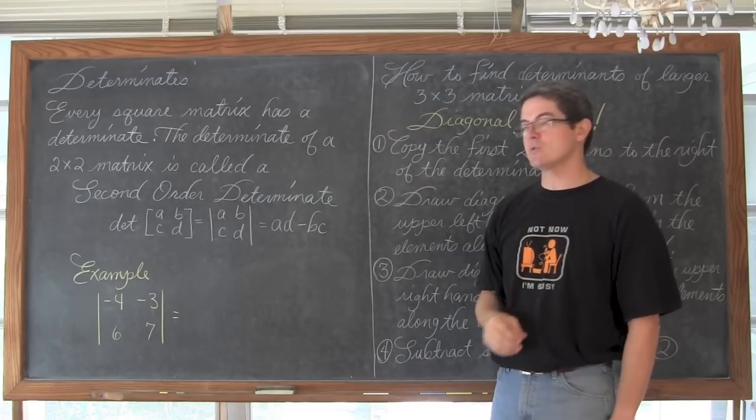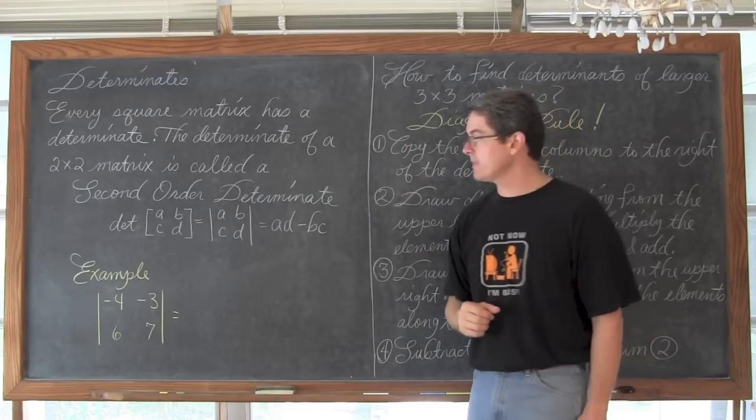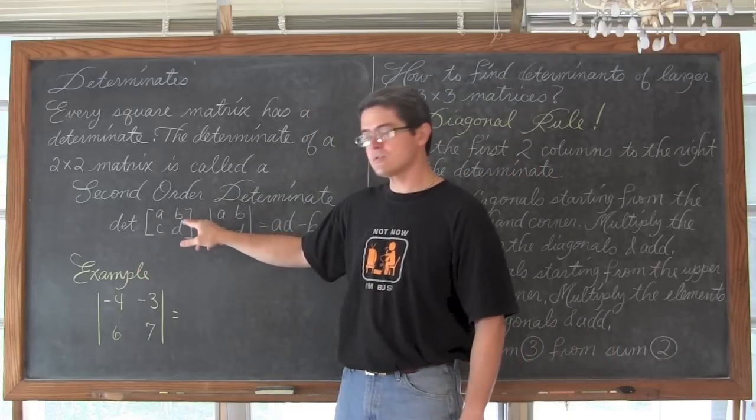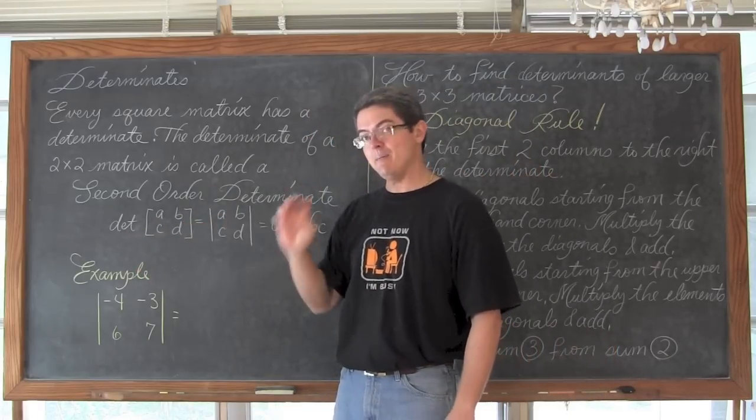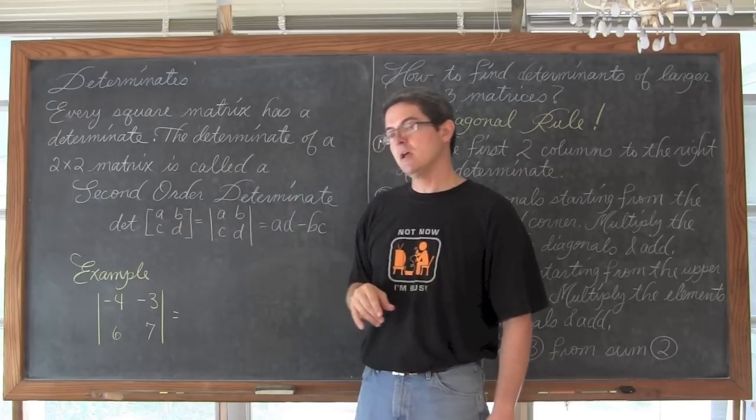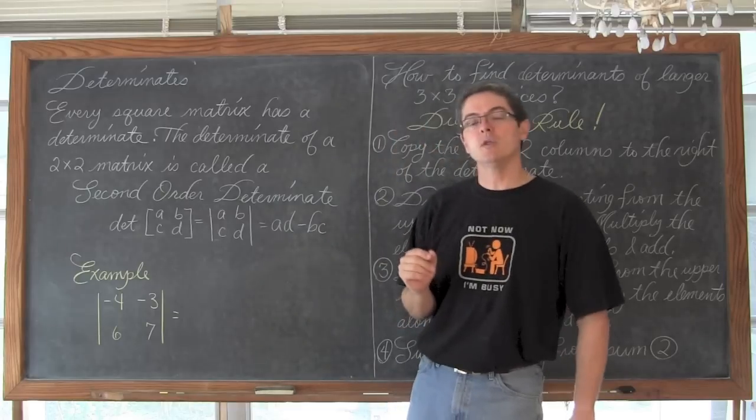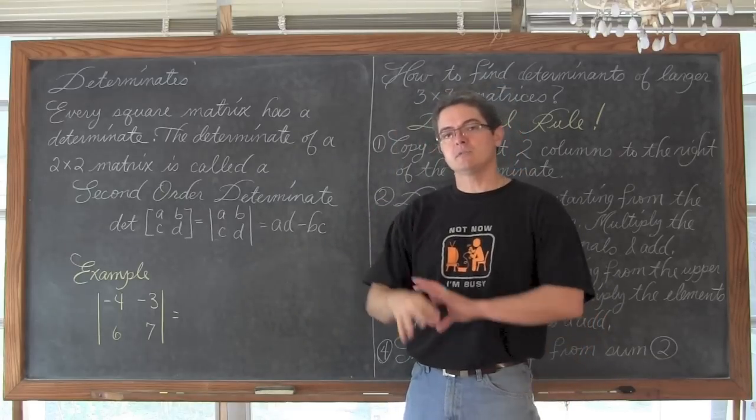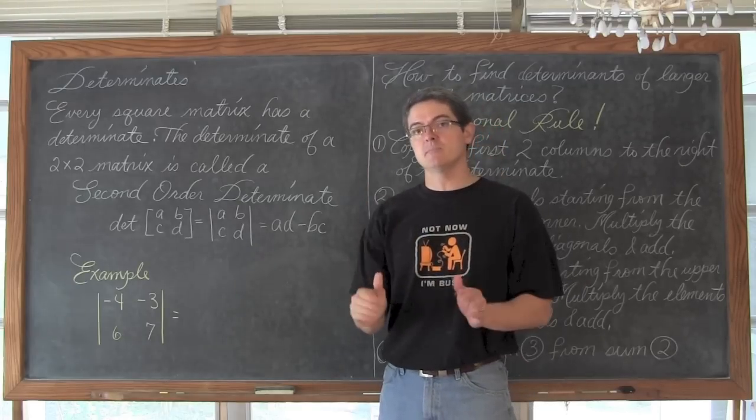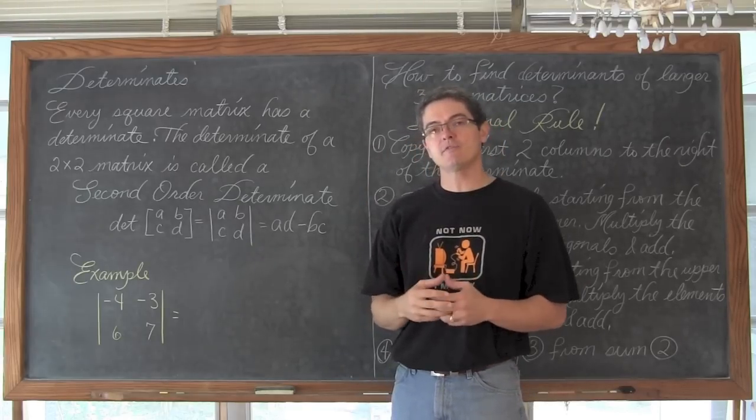The determinant of a 2 by 2 matrix is called the second order determinant. The determinant of a matrix, notice there is no augmented line here, it is just a matrix. We have got the square brackets ABCD. I have DET written in front of it. Now if I want to write that without the abbreviation DET and write symbols to show that I want to find the determinant,